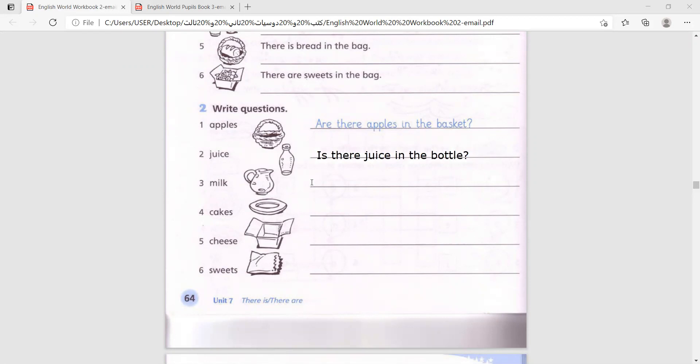Milk. Should we say is or are for milk? Is. Is there milk in the jug? Number four: cakes. Are there cakes on the plate?